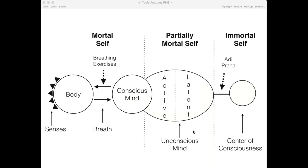There are five Kleshas listed in verse 2.3: Avidya, which is lack of awareness; Asmita, which is self-identity; Raga, which is attachment; Dvesha, which is aversion; and Abhinavesha, which is clinging on to life, or as some translate it, fear of death. Verse 3 merely mentions all five Kleshas, but now we continue and go deeper into each of them.